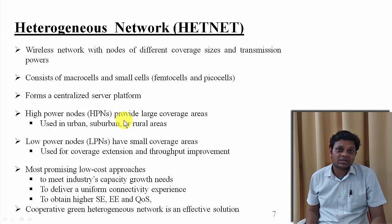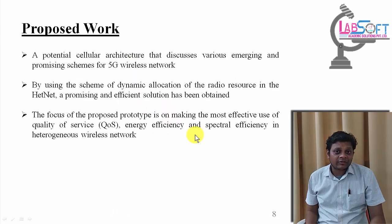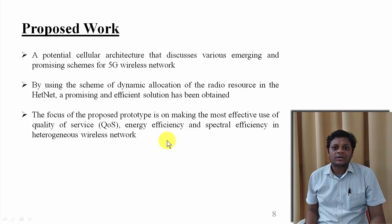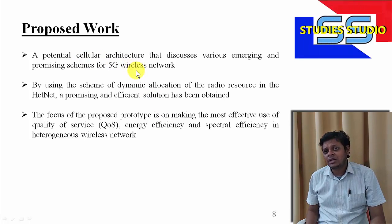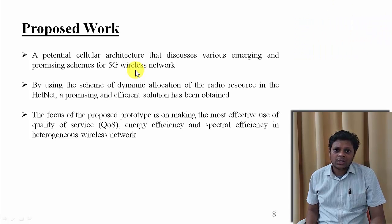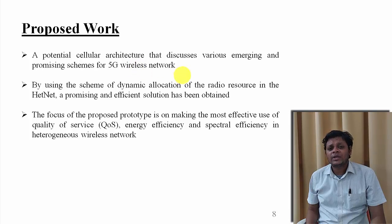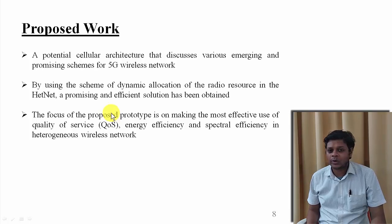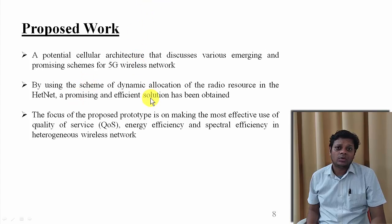In the proposed work presented here, which has already been published in a Springer journal — the link is provided in the description — a potential cellular architecture covering various emerging and promising schemes of wireless 5G network has been proposed. By using dynamic allocation of radio resources in a heterogeneous network, a promising and highly efficient solution has been deduced. The focus of this work is on making the most effective use of QoS parameters: throughput, end-to-end delay, channel utilization, energy efficiency, and spectral efficiency.